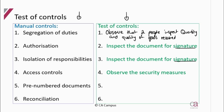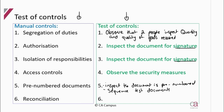For pre-numbered documents, the document has a number already assigned to it — inspect that the document is pre-numbered. In addition, you could perform a sequence test on the documents to make sure they are pre-numbered in sequence. For reconciliation, somebody reconciles, so you can re-perform the reconciliation.